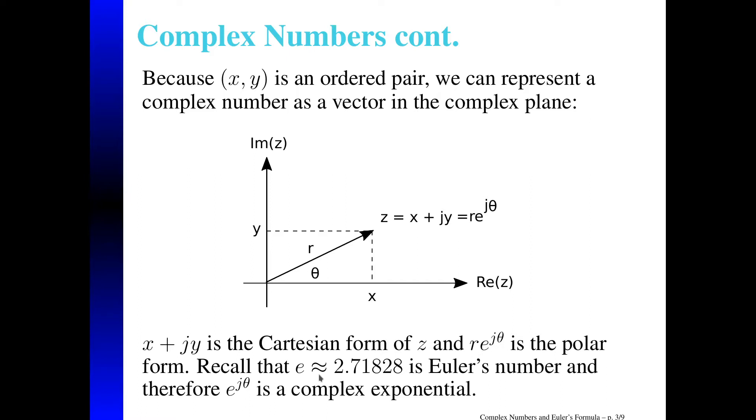So recall that E is Euler's number, which has an approximate value of 2.71828, because it really has an infinite number of digits here. And since we're raising E to the J theta power, where J is the imaginary number, square root minus 1, this is what we call a complex exponential.